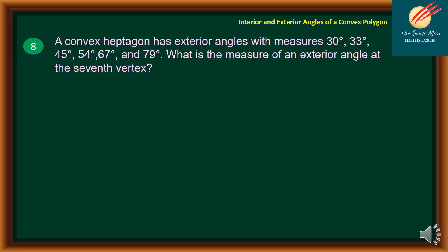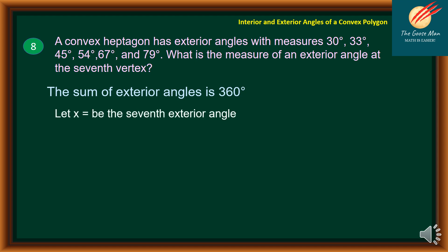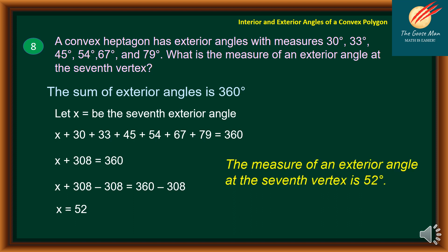Problem 8: A convex heptagon has exterior angles of 30, 33, 45, 54, 67, and 79 degrees. What is the measure of the exterior angle at the 7th vertex? Since the sum of exterior angles is 360 degrees: x plus 30 plus 33 plus 45 plus 54 plus 67 plus 79 equals 360. Adding the constants gives 308, so x plus 308 equals 360. Subtracting 308: x equals 52 degrees.